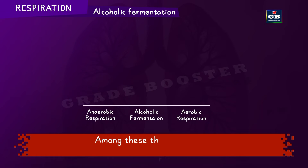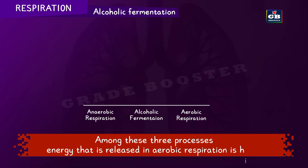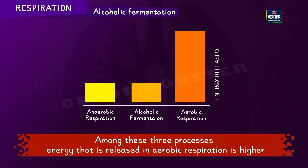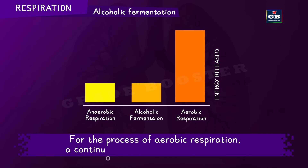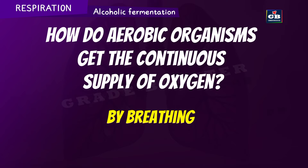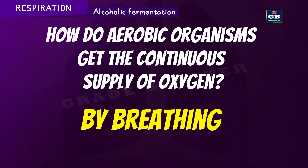Among aerobic respiration, anaerobic respiration, and alcoholic fermentation, the energy released in aerobic respiration is the highest. But for the process of aerobic respiration, a continuous supply of oxygen is needed. So how do aerobic organisms get a continuous supply of oxygen? It is done by breathing.